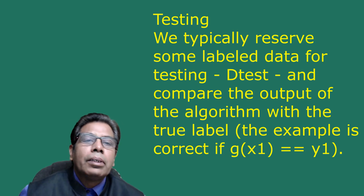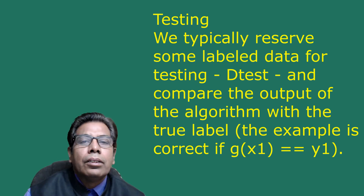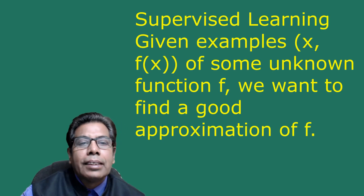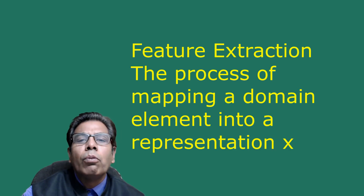We typically reserve some labeled data for testing — D_test — and compare the output of the algorithm with the true label. An example is correct if g(x₁) = y₁. If we have some notion of distance measuring how far g(x) is from y, we can measure the error. Supervised learning is defined as: given examples x and f(x) for some unknown function f, find a good approximation of f. Feature extraction is the process of mapping a domain element into a representation x.